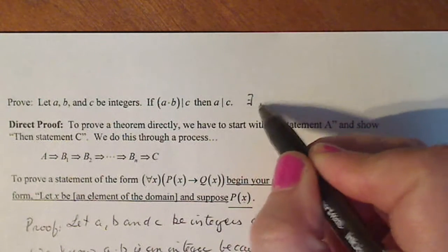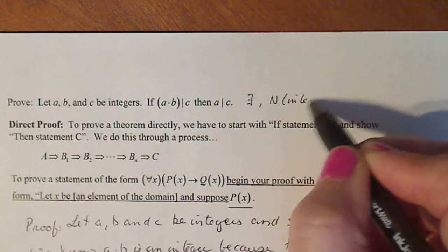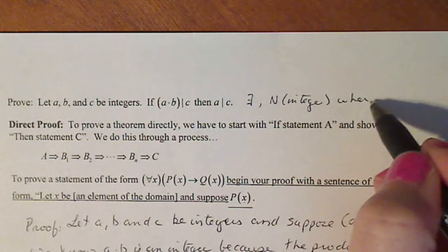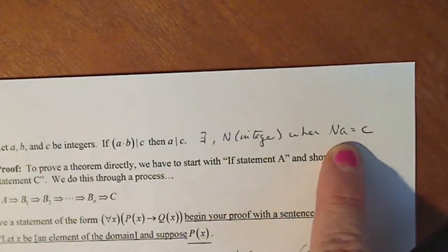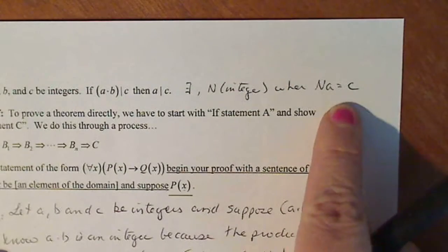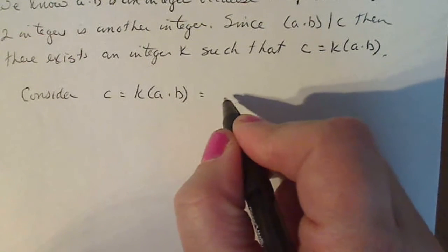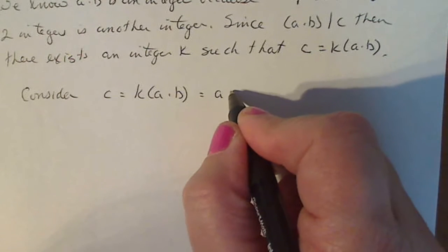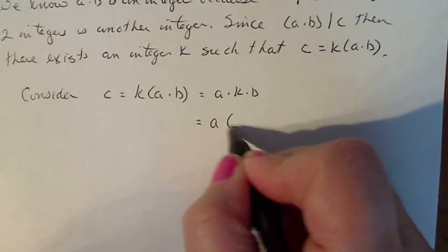So I'm going to use this and what I have here to reach what I want. This is my goal, this is what I have. So let's consider this and I'm just going to manipulate it a little bit. I'm looking for c equals n times a. Well, I have c equals this, which I can rewrite by commutative property as a times k times b, and then by associative property I can write this as a times the quantity k times b.